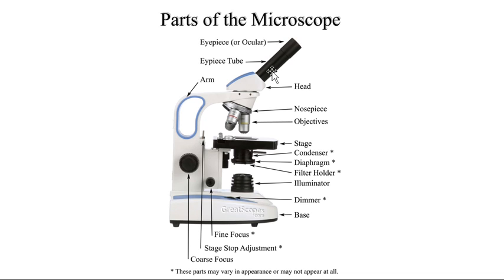This is the eyepiece where we look through. This is the tube, then the nosepiece, and objective lenses. There are different objective lenses ranging from low power to high power and then oil immersion.